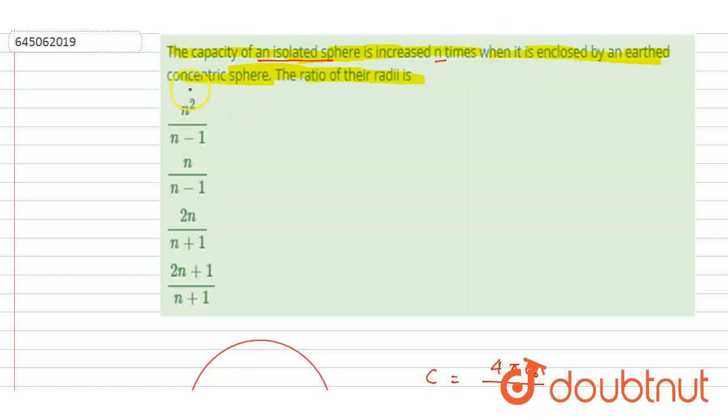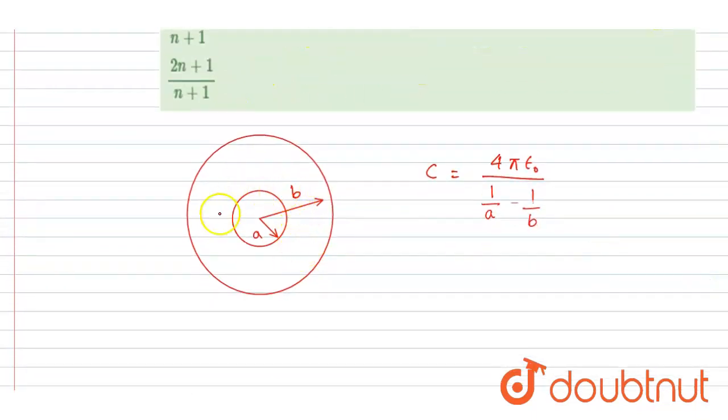So earlier it was a single sphere, there was no b. So we'll make this b infinity. So earlier the initial capacitance was... this b was infinity. Let's say the b was at infinity, so I will put here infinity.